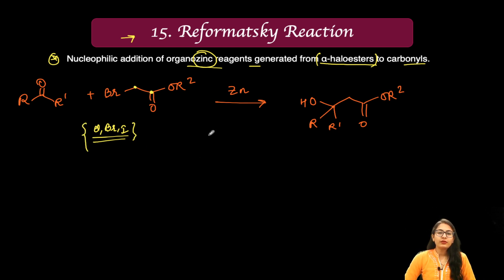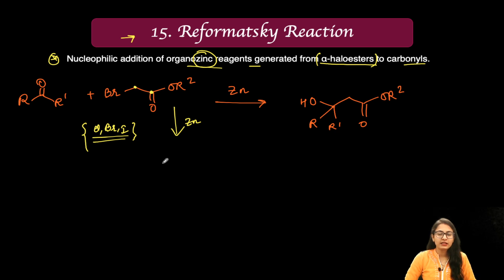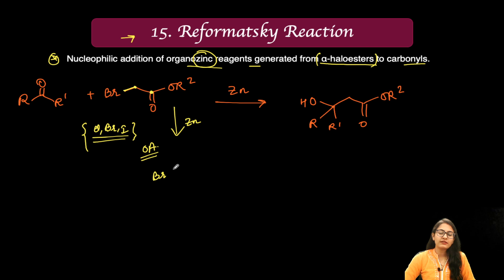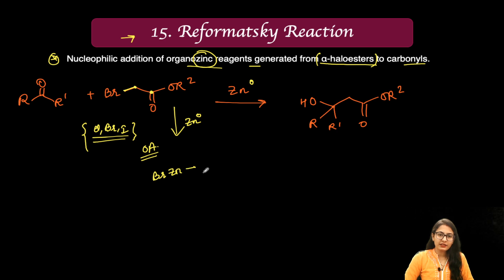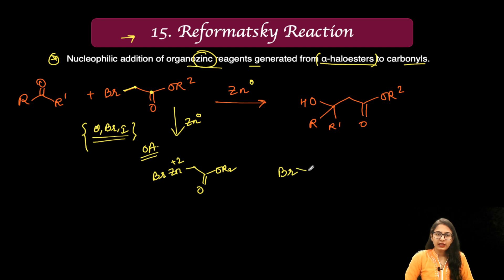In the presence of zinc, the alpha-haloester undergoes what you can consider an oxidative addition step at the carbon-bromine bond. Zinc starts in the zero oxidation state and goes to the plus two oxidation state, becoming connected to the alpha carbon after insertion into the C–Br bond.